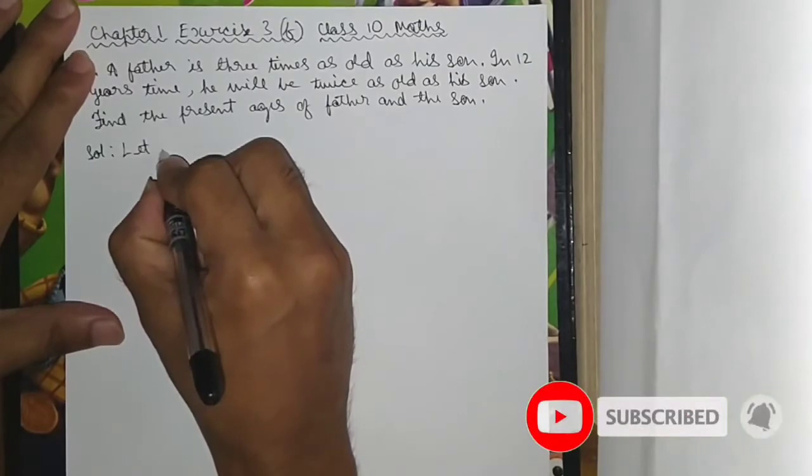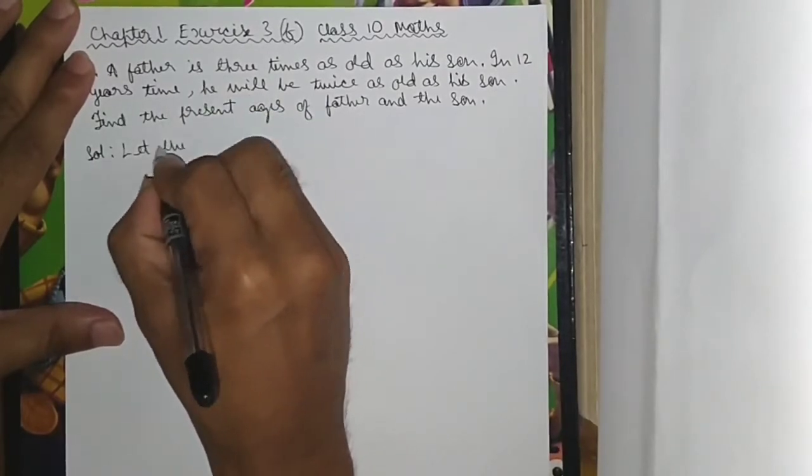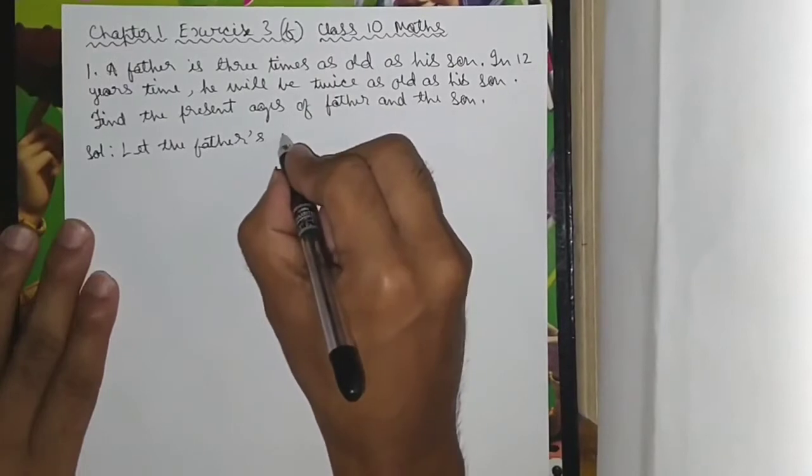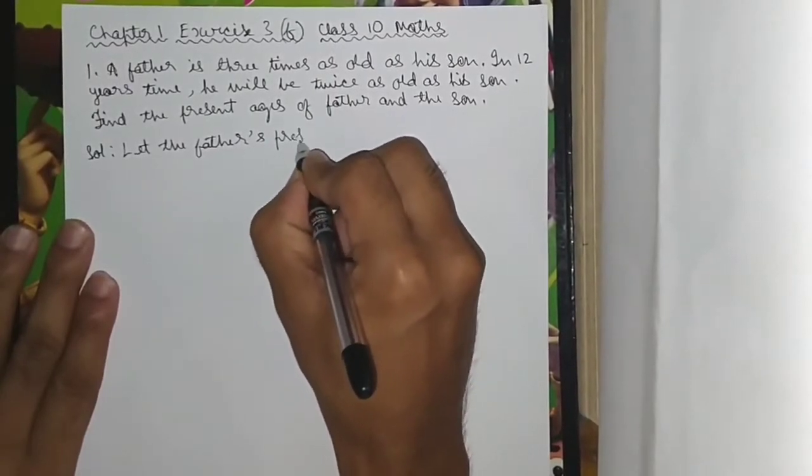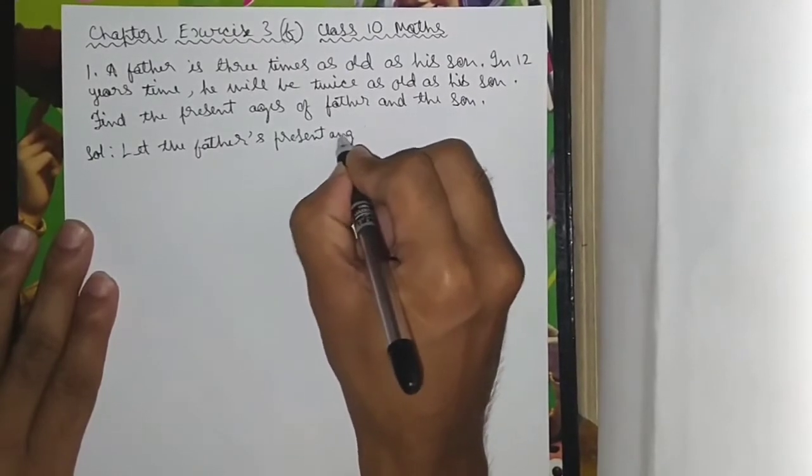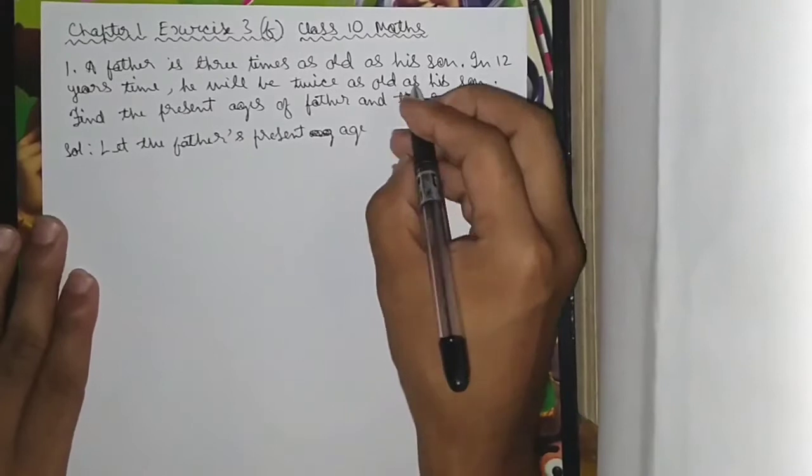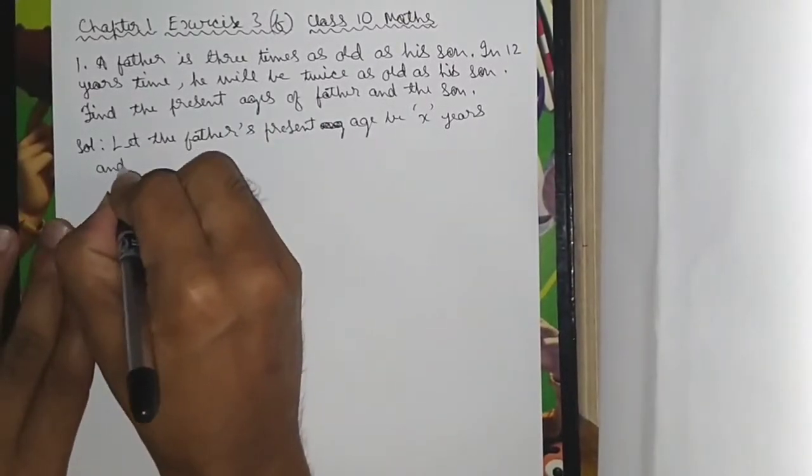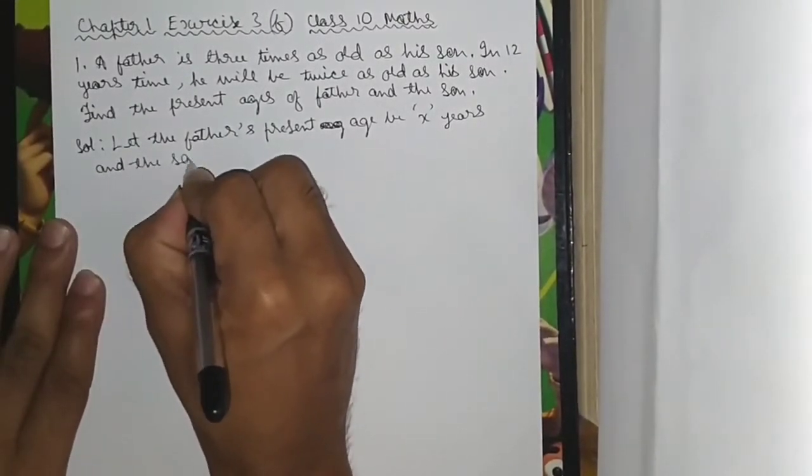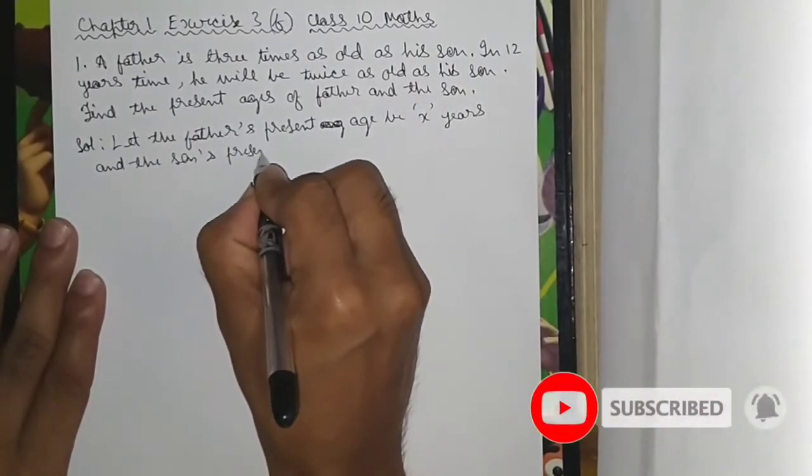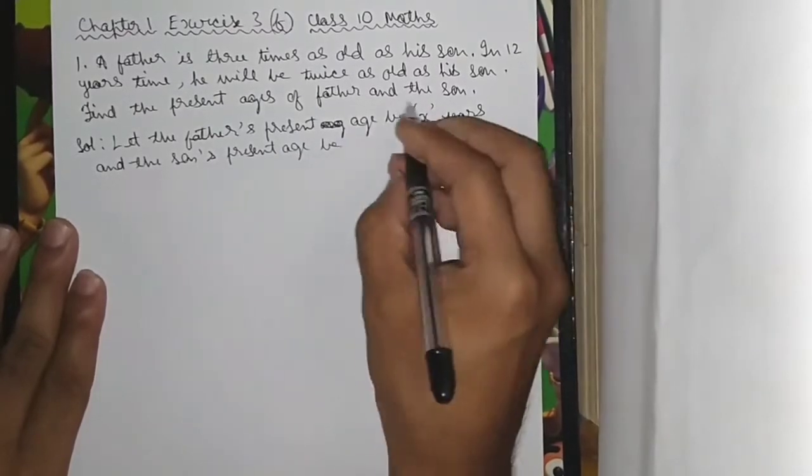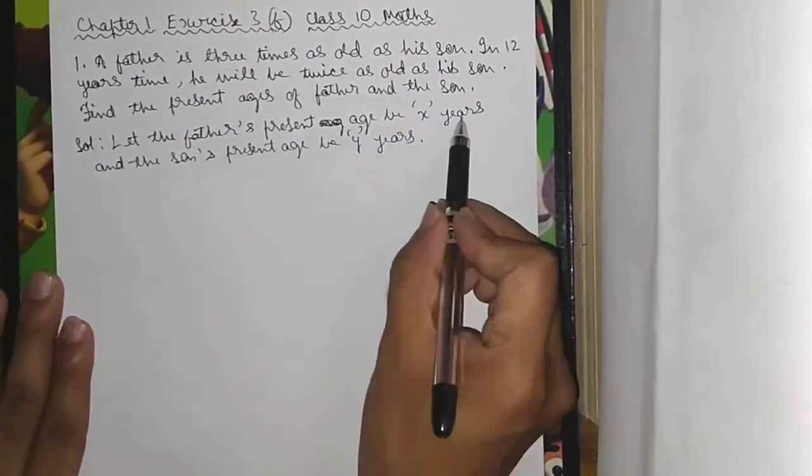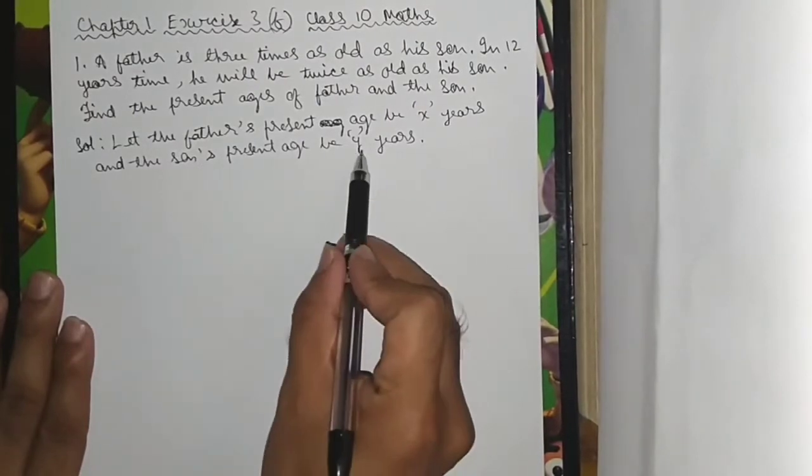Let the father's present age be x years and the son's present age be y years.